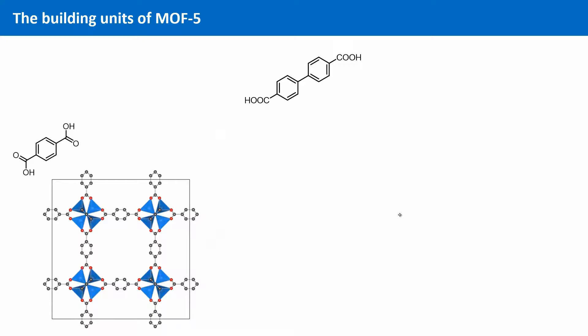We can take for example an organic secondary building unit that has more than just one aromatic ring. If biphenyl dicarboxylic acid is chosen as a linker between the inorganic clusters, we have an organic SBU that is now twice as large as the original linker.